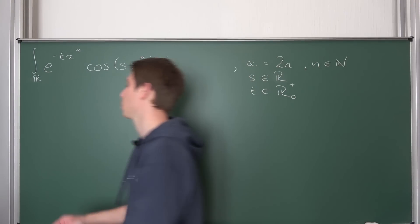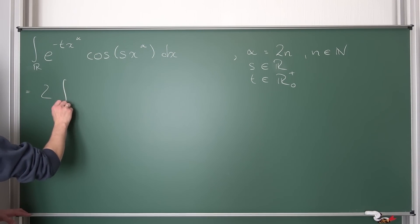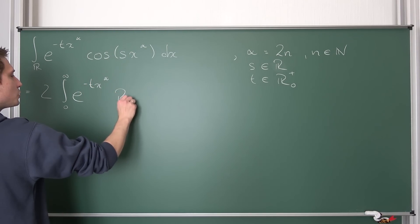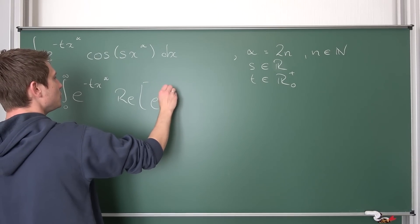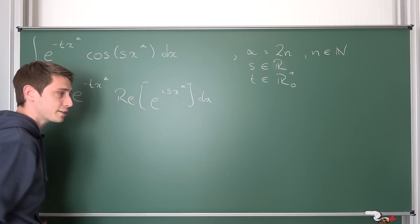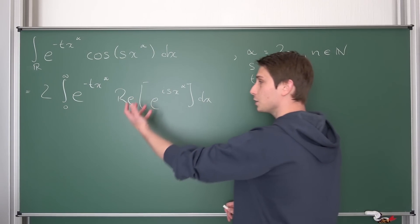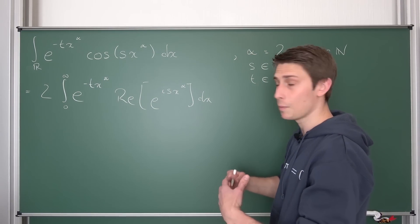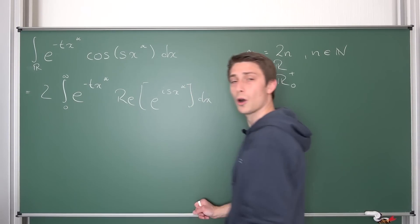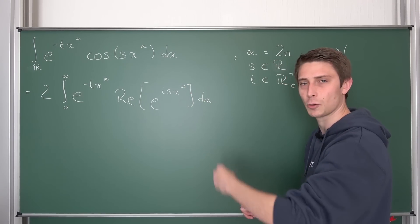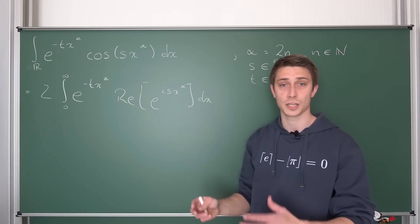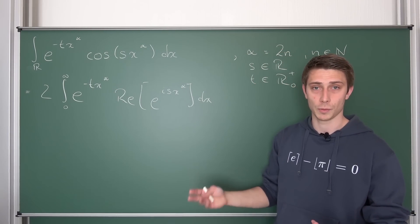So let us put everything on the chalkboard that we have gathered up until this point. This is equal to two times the integral from zero to infinity of e to the negative t times x to the alpha, times the real part of e to the i·s·x to the alpha, integrated with respect to x. We are in the real numbers at the moment, and even the complex numbers form a Banach space, and we can thus interchange those two operators — the integral operator and the real part operator.